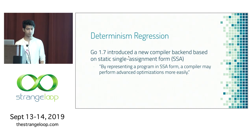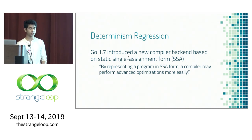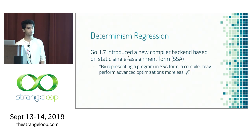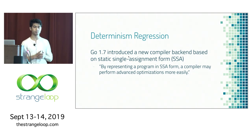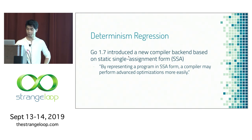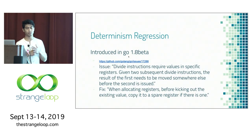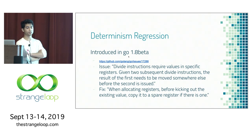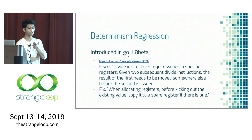I want to dive into something that happened with Go determinism. Go 1.7 introduced a new compiler backend based on Static Single Assignment (SSA) form — a design principle where representing a program in this form enables optimizations that can't exist without it and makes other optimizations better. This led to big improvements in compiler performance and binary speed. It also introduced a regression where divide instructions within the binary require values in specific registers, and if you have two subsequent divide instructions, the result needs to be moved somewhere before the second is issued.